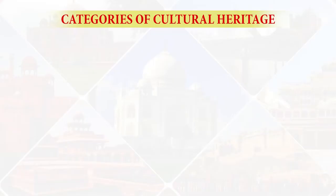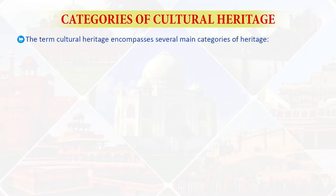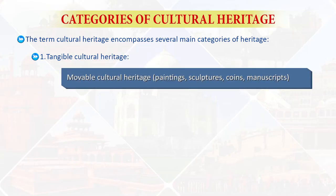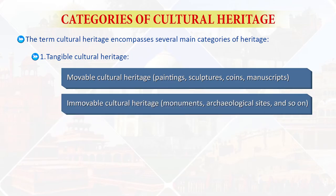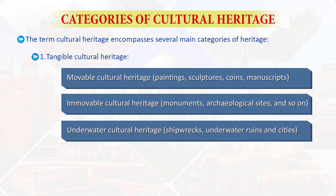This is defined by Icomos in 2002. Categories of cultural heritage: the term cultural heritage encompasses several main categories. Tangible cultural heritage includes movable cultural heritage such as paintings, sculptures, coins, manuscripts; immovable cultural heritage such as monuments and archaeological sites; and underwater cultural heritage like shipwrecks, underwater ruins and cities.